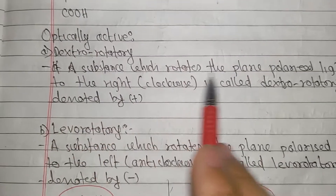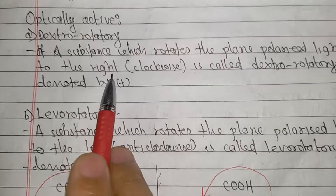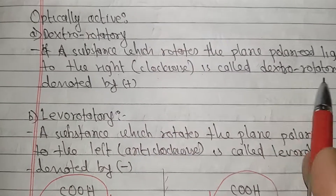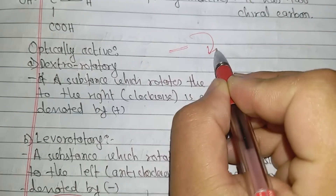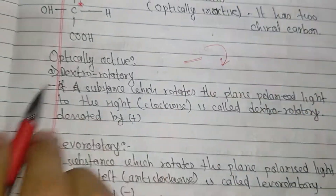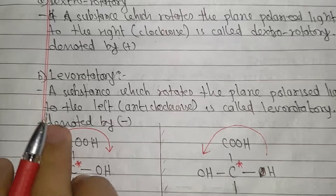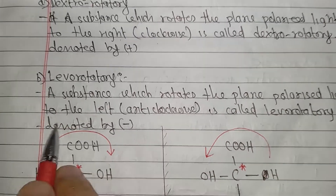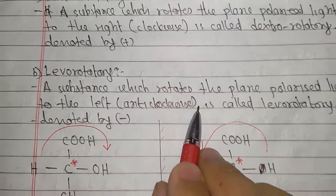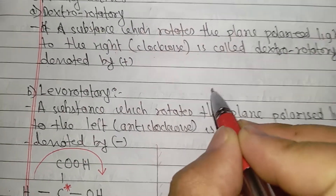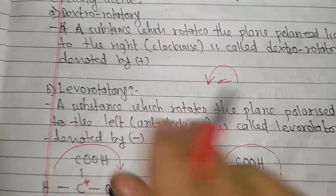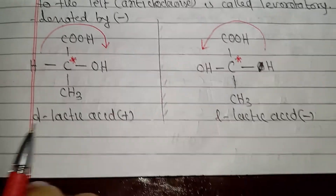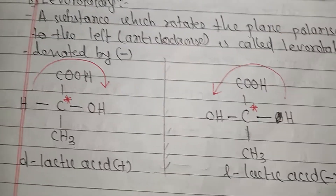A substance which rotates the plane polarized light to the right (clockwise) is called dextrorotatory, denoted by plus (+). A substance which rotates the plane polarized light to the left (anticlockwise) is called levorotatory. For example, lactic acid has a structural formula showing optical activity.